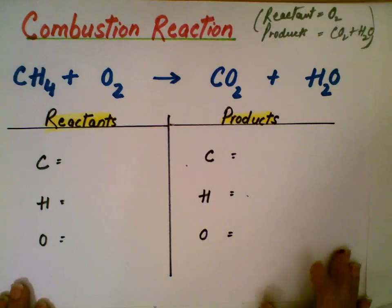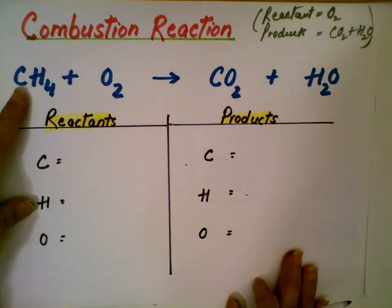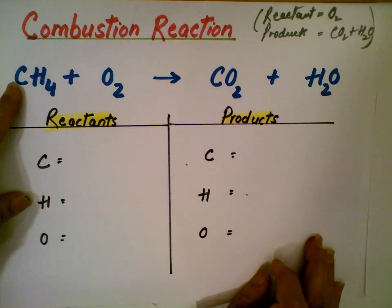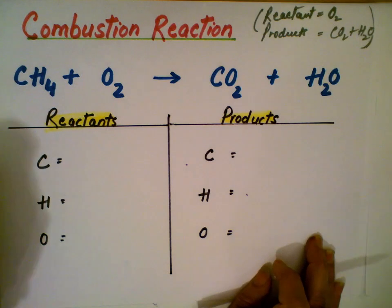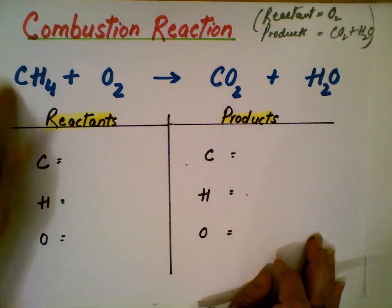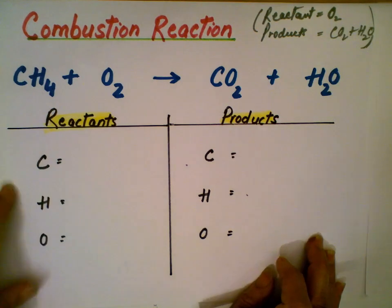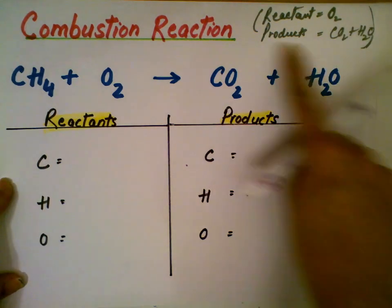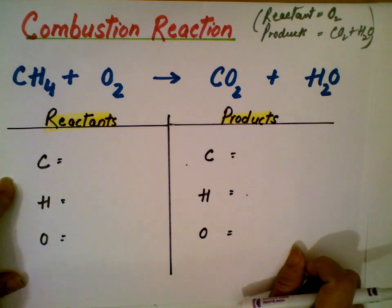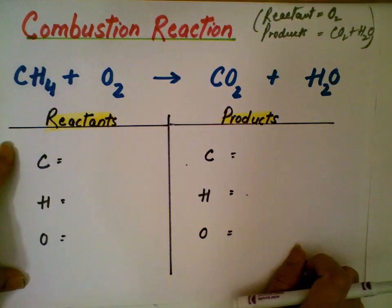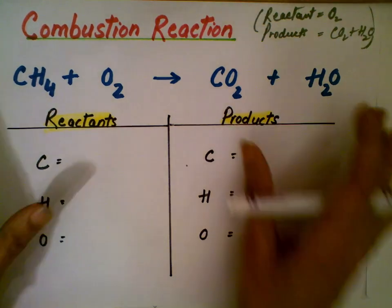So this equation here — we have a balanced equation. What does that even mean? That means you should have equal number of atoms of each element on the reactant side and on the product side. We want to make sure that the number of atoms of each element are equal on both sides.